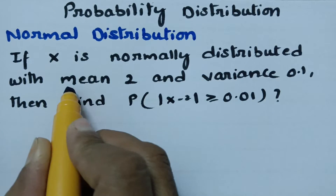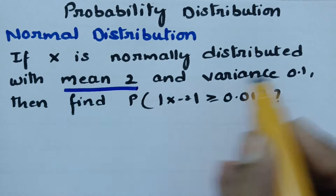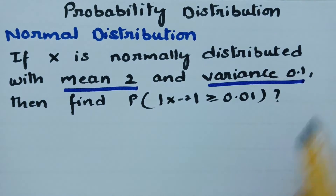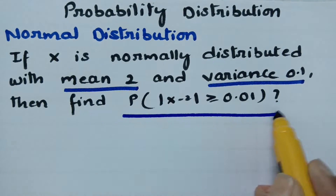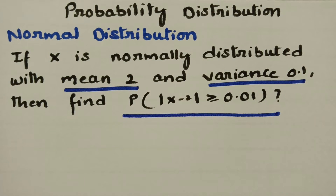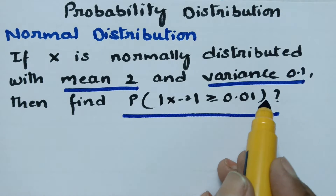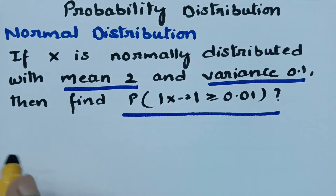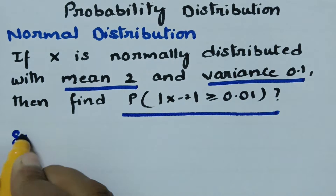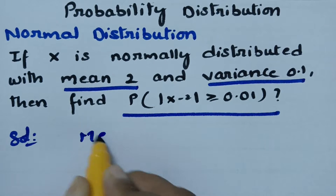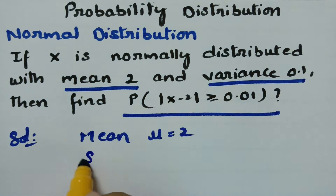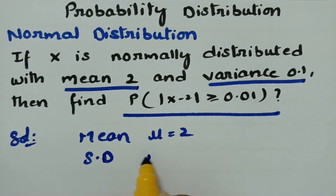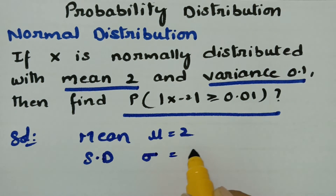The mean is given as 2 and the variance is given as 0.1. We have to find out the probability of modulus of x minus 2 greater than or equal to 0.01. The mean mu is given as 2 and the standard deviation sigma is given as 0.1.